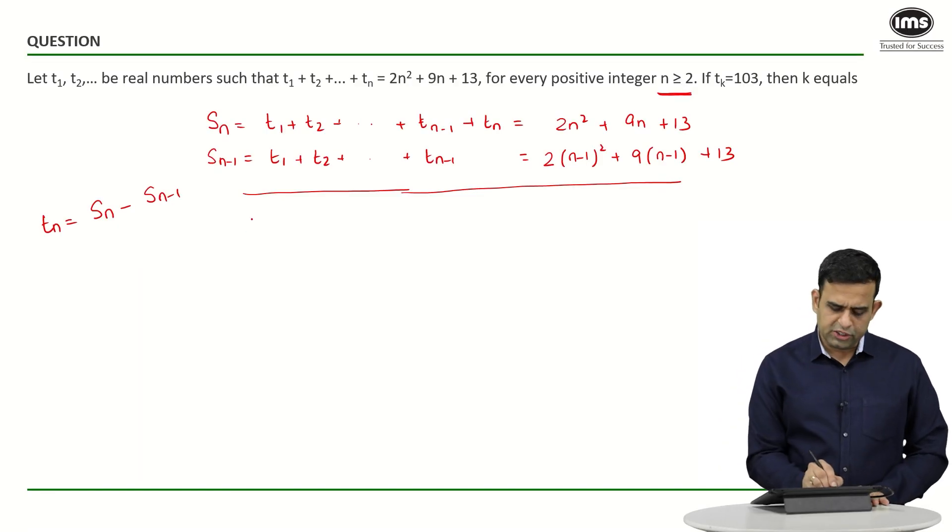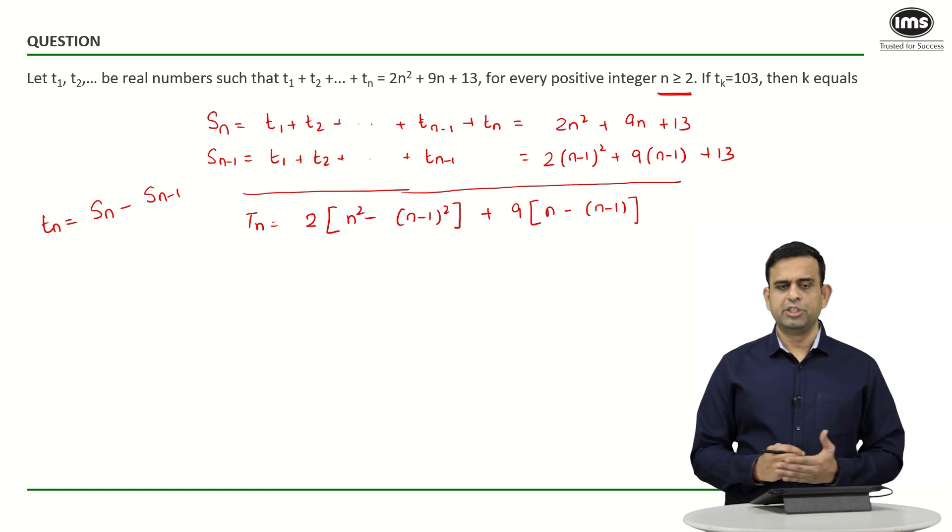So we get tₙ which is going to be equal to 2(n² - (n-1)²) + 9 common, I will get n - (n-1), and 13 - 13 becomes 0.